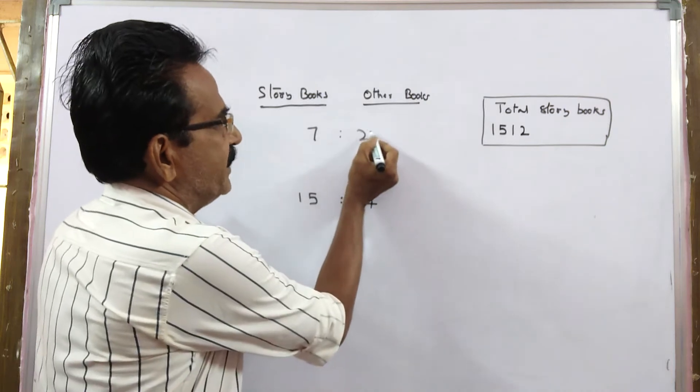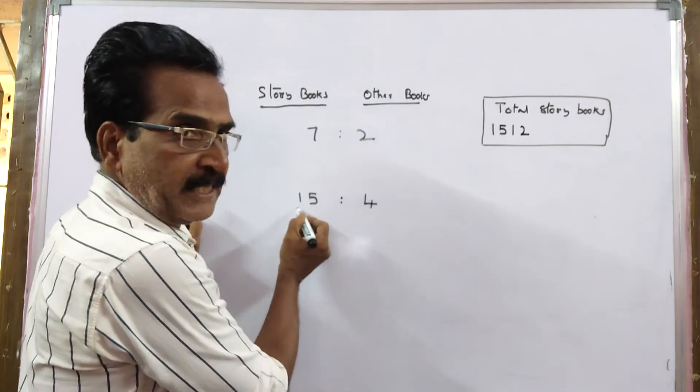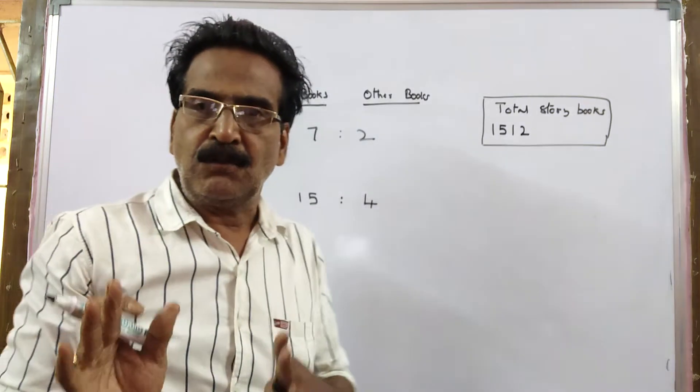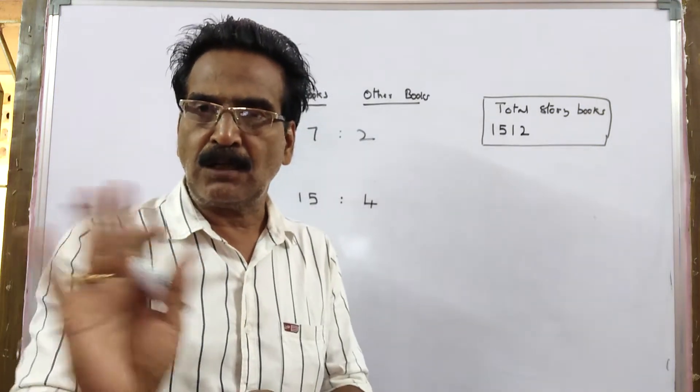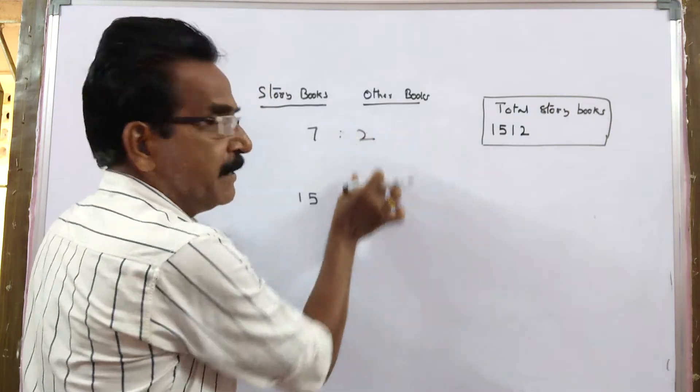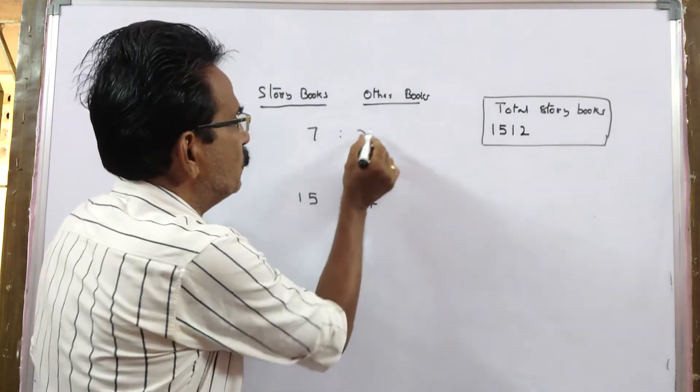See friends, first the ratio is 7 is to 2. Now, it is 15 is to 4. We have collected only storybooks. We have not collected any other books. So, this part must be made equal.